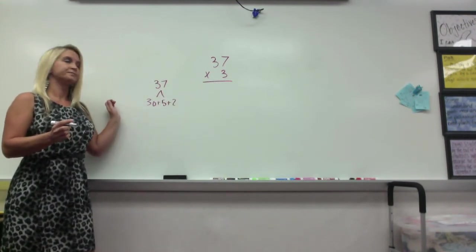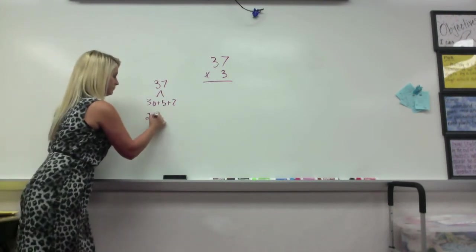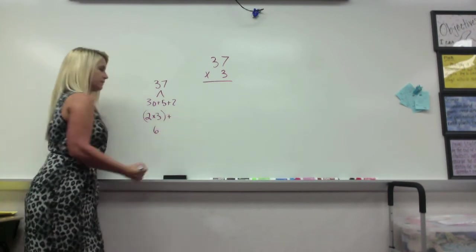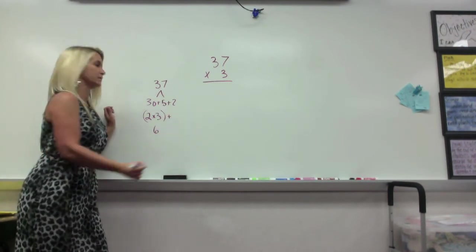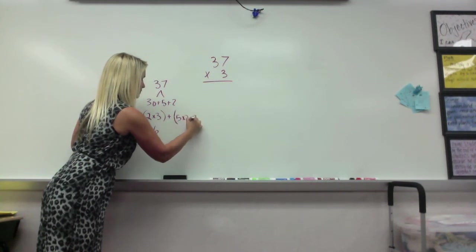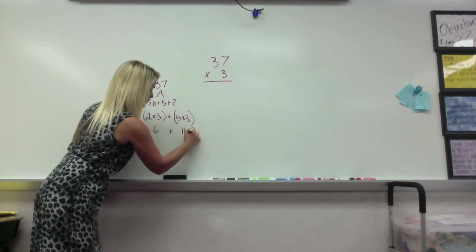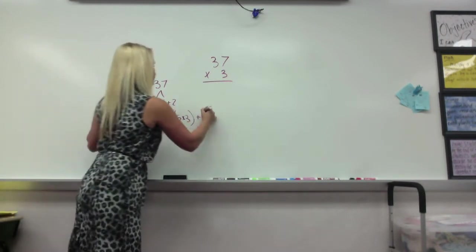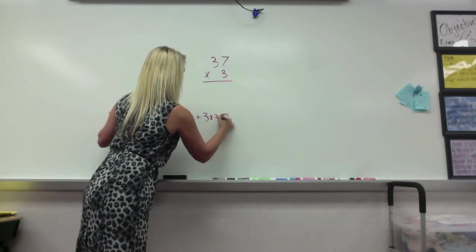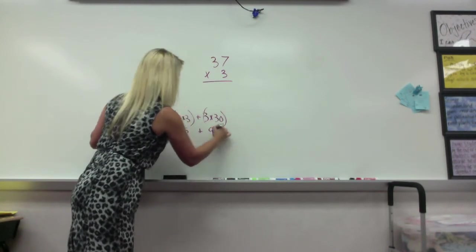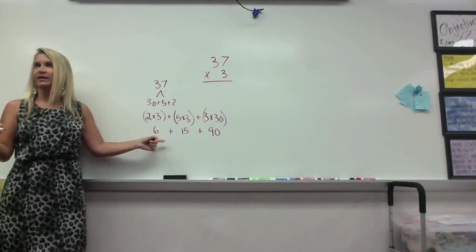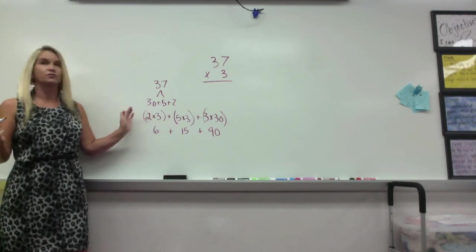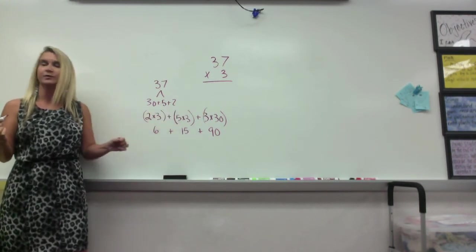Then I did 2 times 3 equals 6, 5 times 3 equals 15, and 3 times 30 equals 90. Are you guys following what she's saying and what I've done here on the board? Remember, I want you to understand that we're putting them in parentheses, and then we can add them all when we're done.